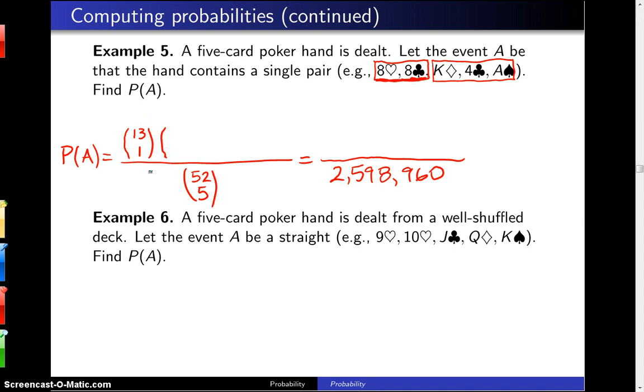Now once we choose the rank of the pair, then there are four different suits that can be taken, chosen from, and we're going to select two of them. In this particular case, we chose hearts and clubs, but we could have chosen spades and clubs or any number of other possibilities, and four choose 2 are six different ways to do this.